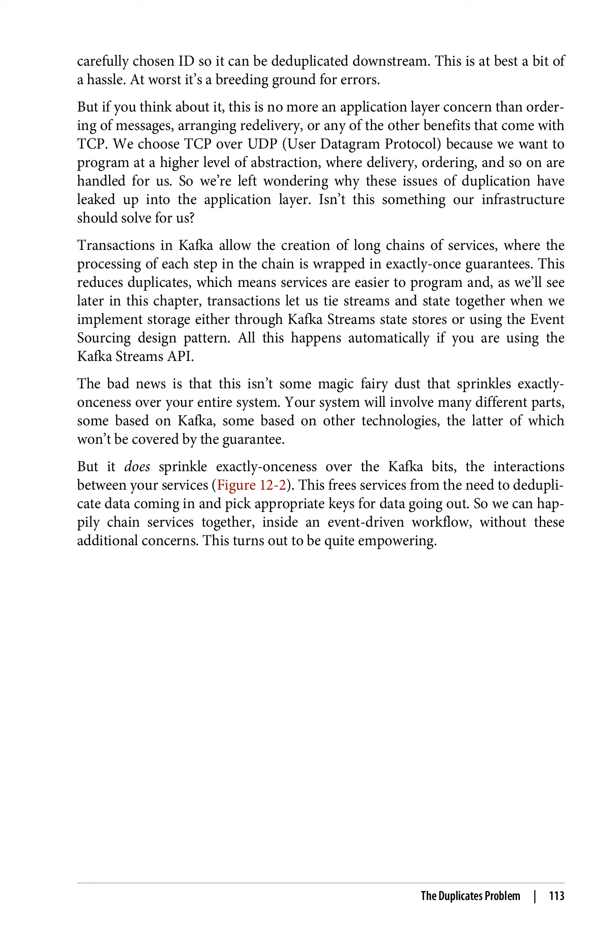Transactions in Kafka allow the creation of long chains of services, where the processing of each step in the chain is wrapped in exactly-once guarantees. This reduces duplicates, which means services are easier to program, and as we'll see later in this chapter, transactions let us tie streams and state together when we implement storage either through Kafka Streams state stores or using the event sourcing design pattern. All this happens automatically if you are using the Kafka Streams API. The bad news is that this isn't some magic fairy dust that sprinkles exactly-once-ness over your entire system. Your system will involve many different parts, some based on Kafka, some based on other technologies, the latter of which won't be covered by the guarantee. But it does sprinkle exactly-once-ness over the Kafka bits — the interactions between your services (figure 12-2). This frees services from the need to deduplicate data coming in and pick appropriate keys for data going out, so we can happily chain services together inside an event-driven workflow without these additional concerns. This turns out to be quite empowering.